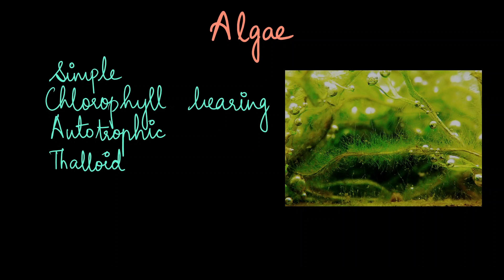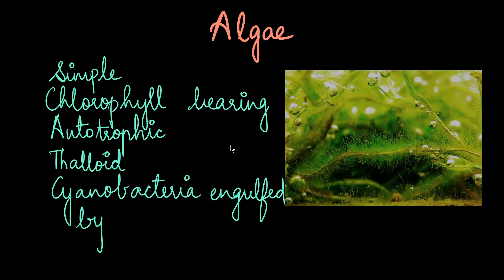Did you know how algaes came about? It is believed that one of the earliest algae — the cyanobacteria or blue-green algae — was engulfed or phagocytosed by a eukaryotic cell, and somehow the organelles combined and evolved to form the algae that we have right now.